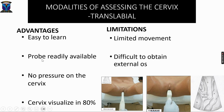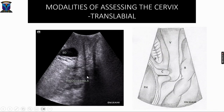Translabial imaging is easy to learn and the transabdominal probe can be used, which is readily available. There is no probe pressure on the cervix, and the cervix is visualized in 80% of cases. In 20% of cases, visualization fails — especially due to gas shadowing from the rectum. The external os cannot be visualized, movements are limited, and as seen here on this translabial scan, there is extensive shadowing from the rectum preventing visualization beyond the external os.